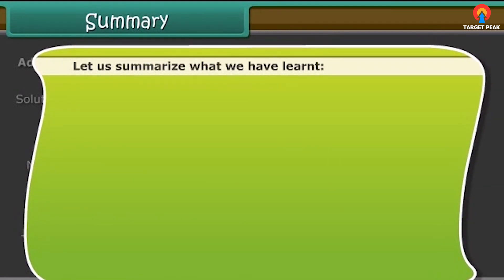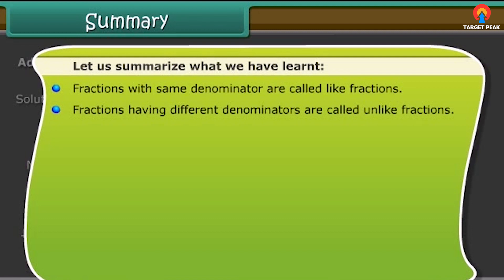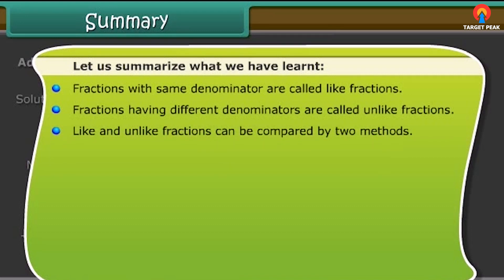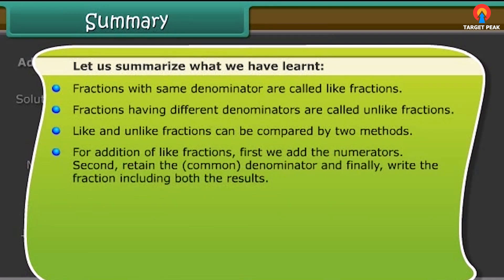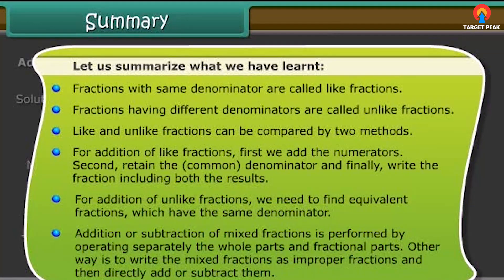Let us summarize what we have learned. Fractions with the same denominator are called like fractions; fractions with different denominators are called unlike fractions. Like and unlike fractions can be compared by two methods. For addition of like fractions, add the numerators and retain the common denominator. For addition of unlike fractions, find equivalent fractions with the same denominator. Addition or subtraction of mixed fractions is performed by operating separately on the whole parts and fractional parts, or by converting to improper fractions and then adding or subtracting directly.